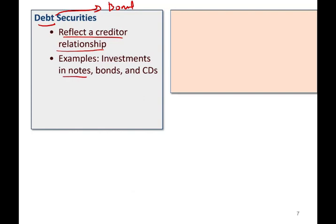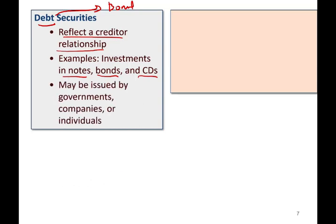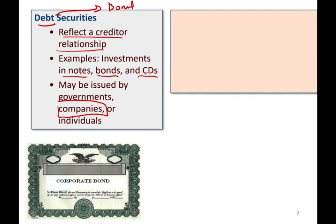Investments in notes, bonds, and CDs — certificate of deposit — are debt investments. When you deposit money in the bank, you are making an investment, and it's a debt investment, because you're going to get your money back plus interest. Debt securities may be issued by governments, companies, or individuals. In this chapter, we're going to say you bought the corporate bond of XYZ company — think of corporate bonds when you think of debt investments.